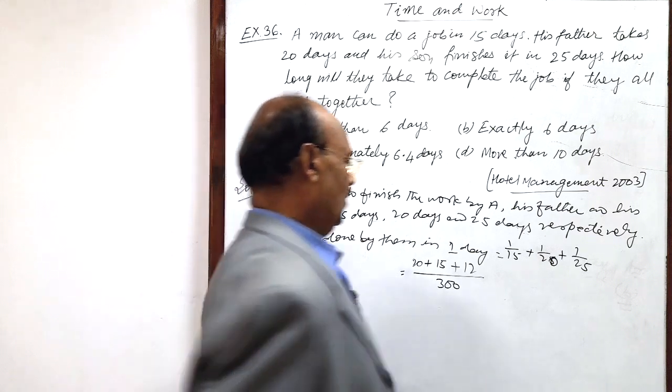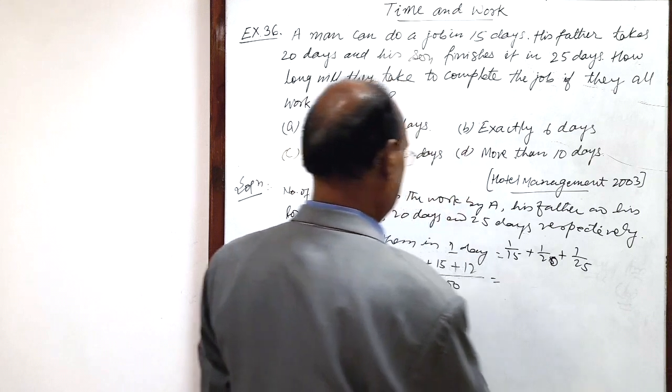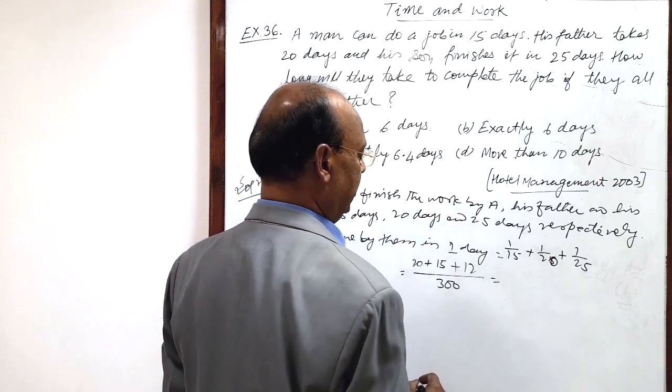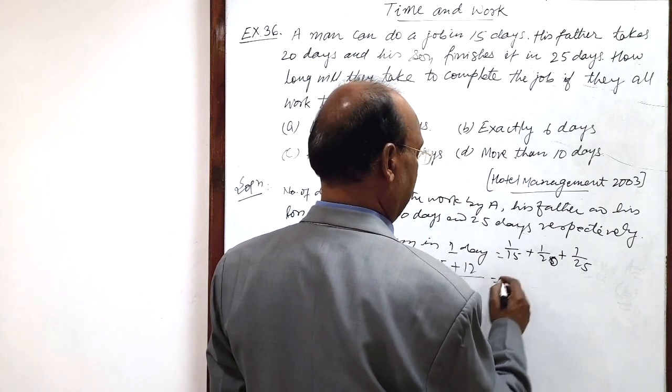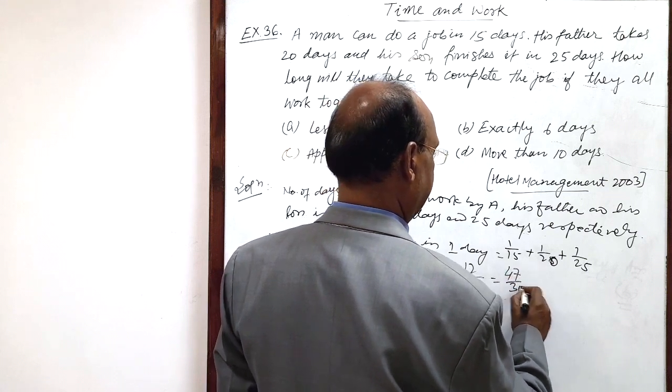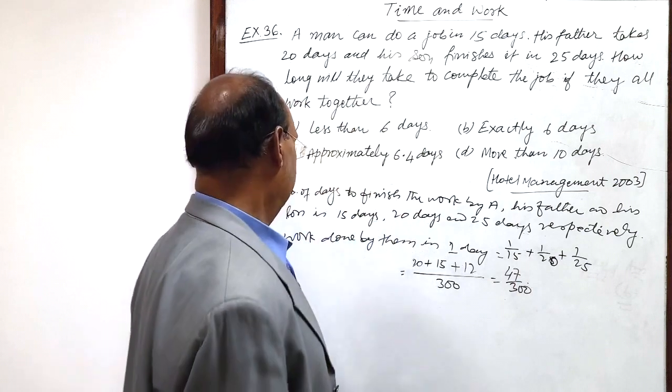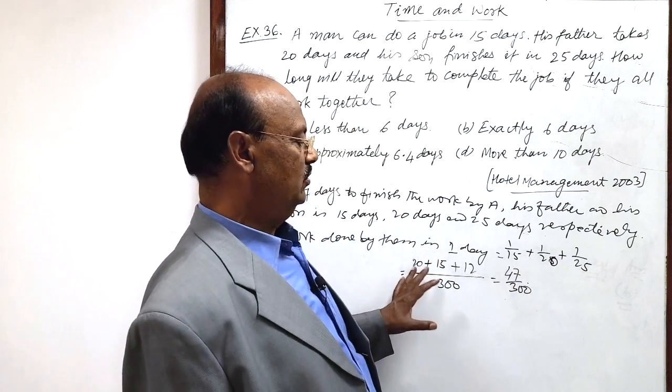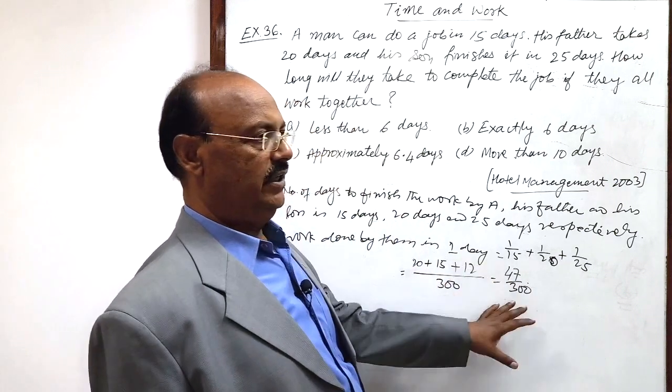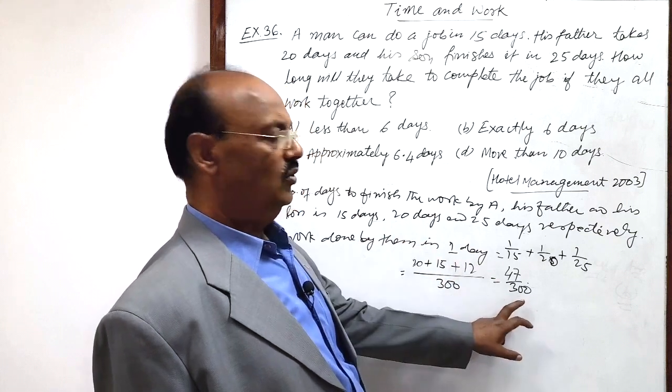And 20 plus 15 is 35 plus 12, 47 divided by 300. This much amount of work has been done by them in one day.